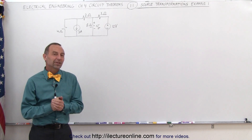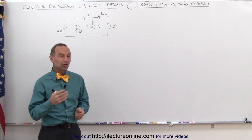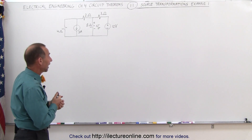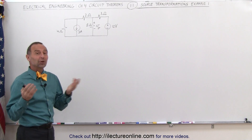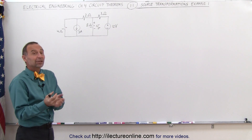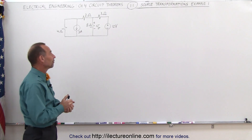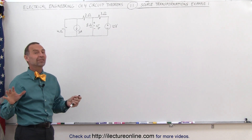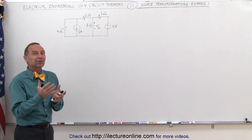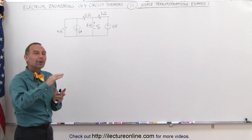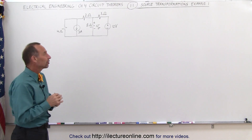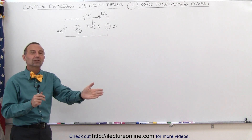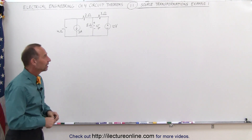Welcome to ElectronLine. Let's take a look at our first example of the source transformation technique to solve circuits. It's quite amazing because all we have to do is keep transforming and simplifying, and at the end you end up with something really simple to solve easily. It's not always clear what you should do, but as long as you keep going back and forth between the two and simplifying the circuit, eventually you'll get there. There may be multiple paths to the final solution.